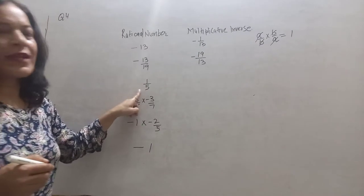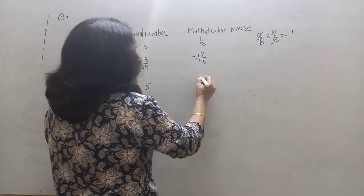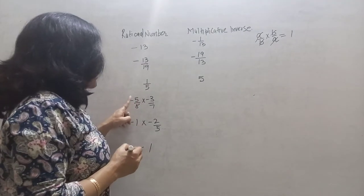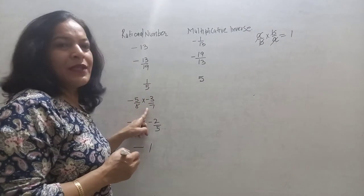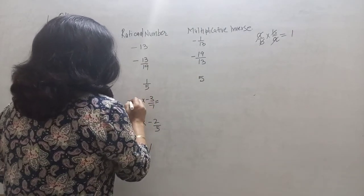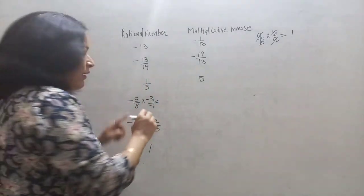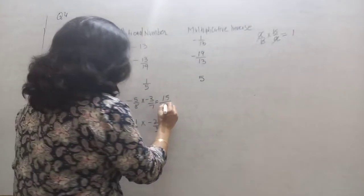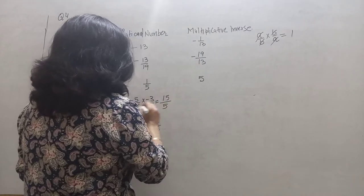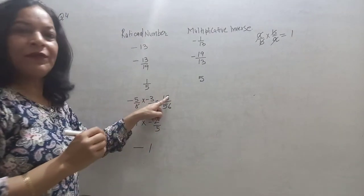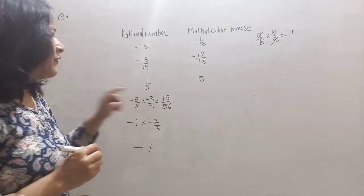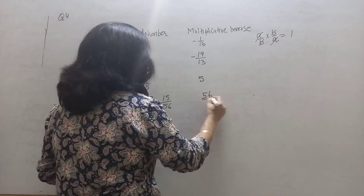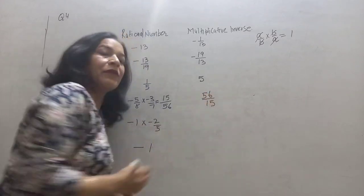For 1 upon 5, the reciprocal will be 5 upon 1, or simply 5. For minus 5 upon 8 multiplied by minus 3 upon 7: minus into minus equals plus, 5 into 3 is 15, and 8 sevens are 56, so the product is 15 upon 56. Its reciprocal will therefore be 56 upon 15.